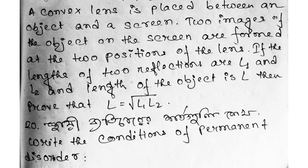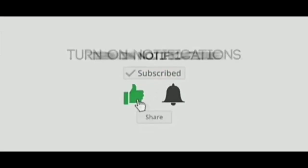This is a very important proof. The last question: write the conditions for permanent constructive interference. These questions are important for the exam. There is a link in the description box where you can find more questions and resources.